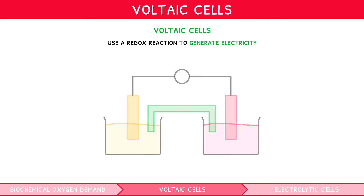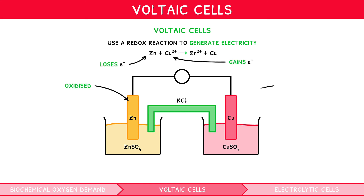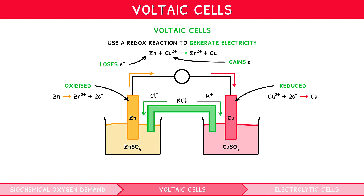Let's put this information into context using a diagram of the common voltaic cell made from zinc sulfate and copper sulfate solution, again using KCl for the salt bridge, where the overall reaction is Zn + Cu²⁺ → Zn²⁺ + Cu. We can see that zinc loses electrons, so is oxidised, whilst Cu²⁺ gains electrons, so is reduced. Therefore, zinc undergoes this half equation at the anode: Zn → Zn²⁺ + 2e⁻, whilst copper ions undergo this half equation at the cathode: Cu²⁺ + 2e⁻ → Cu. Electrons therefore flow from zinc to copper, which should be labelled on the external circuit. Likewise, the movement of Cl⁻ from the salt bridge into the zinc sulfate solution, and K⁺ into the copper sulfate solution should be labelled.